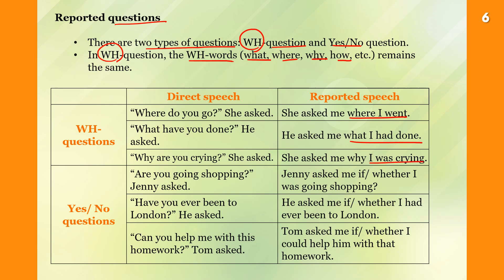Now, yes/no questions. 'Are you going shopping?' Jenny asked. Jenny asked if or whether I was going shopping. 'Have you ever been to London?' he asked. He asked me if or whether I had ever been to London. 'Can you help me with this homework?' Tom asked. Tom asked me if or whether I could help him with that homework.